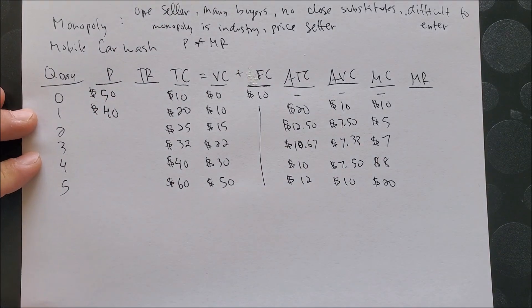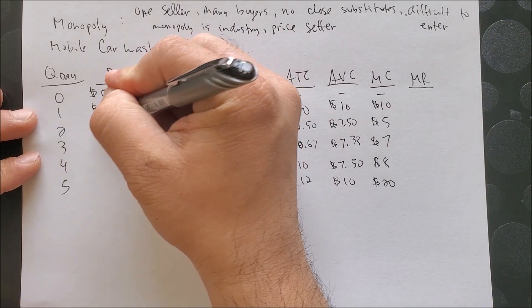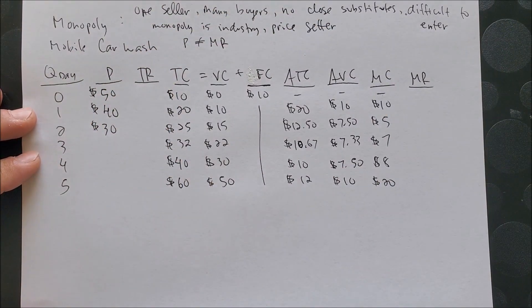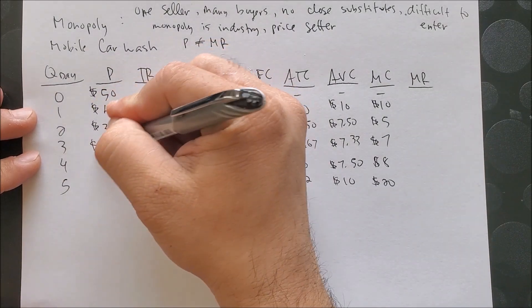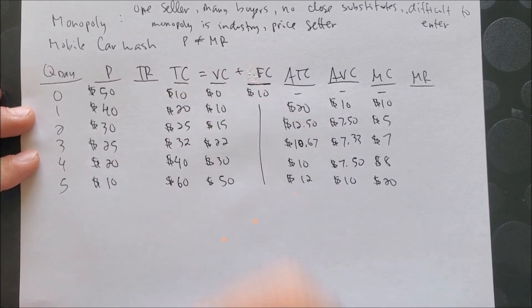At $40, they can wash one vehicle. If they lower their price some more, $30, they can wash two, $25, $20, and let's say down to $10.